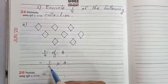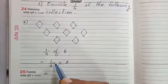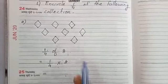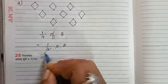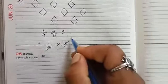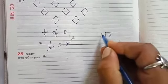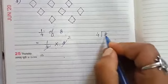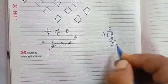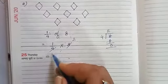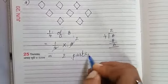In my last video I told you that instead of 'of' we can write multiplication. So one by four multiplied by eight. One-fourth of eight is 2 parts.